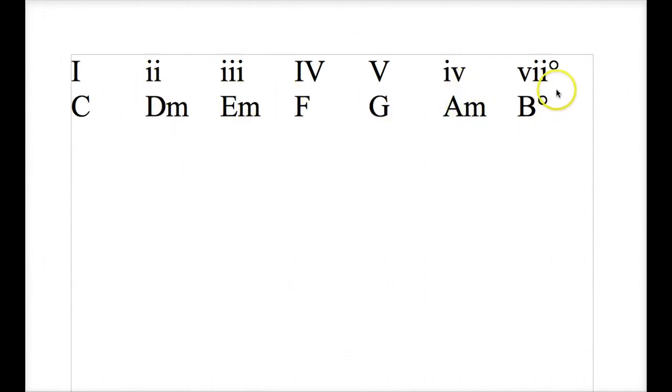And then we have the weirdo in the family. The 7 chord is diminished. It does have a minor interval so we indicate that with the lowercase roman numerals and then we have this diminished sign here that indicates that it is a diminished chord.